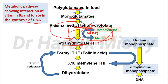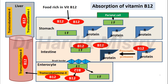Tetrahydrofolate is converted to formyl tetrahydrofolate, also known as folinic acid. Folinic acid is then converted to 5,10-methylene tetrahydrofolate. This step also converts uridine monophosphate to deoxythymidine monophosphate, which is necessary for DNA synthesis. The 5,10-methylene tetrahydrofolate is converted to dihydrofolate, and dihydrofolate is converted back to formyl tetrahydrofolate via dihydrofolate reductase. Without vitamin B12, this step does not occur, so deoxythymidine monophosphate cannot be formed and DNA synthesis is impaired.